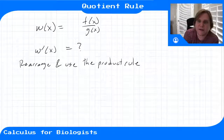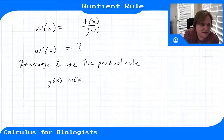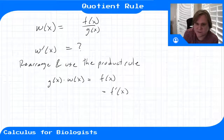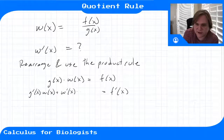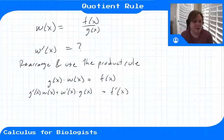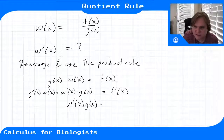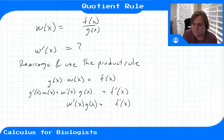We multiply both sides by g, so g of x times w of x equals f of x. Then we apply the product rule: f prime of x equals g prime of x times w plus w prime of x times g. Then we isolate w prime of x: w prime of x times g of x equals f prime of x minus g prime of x times w of x.